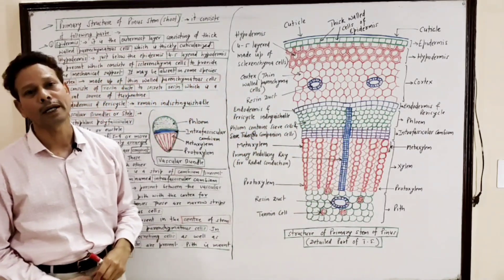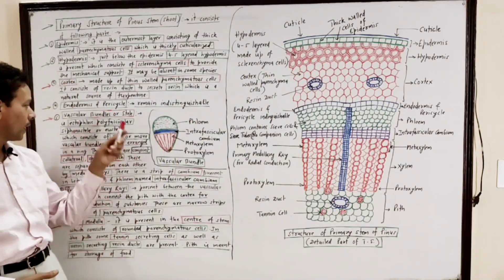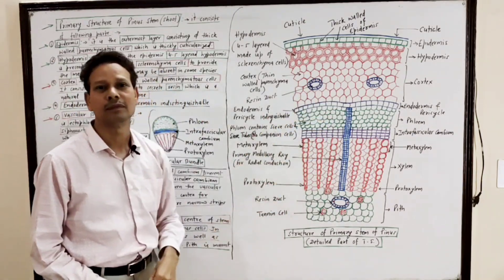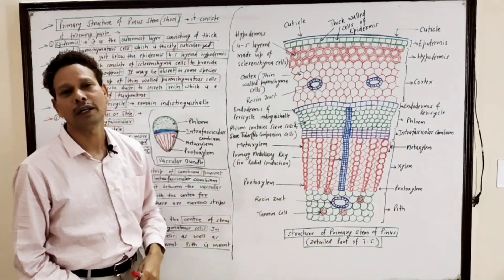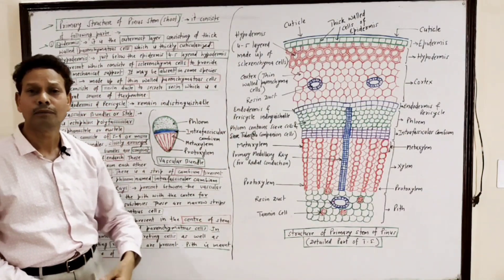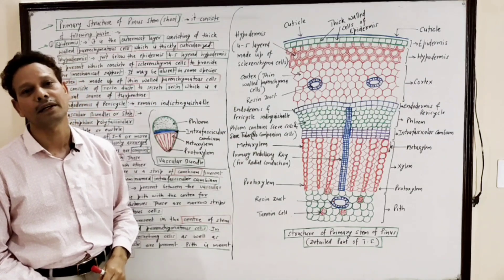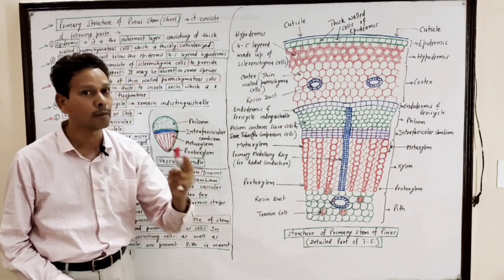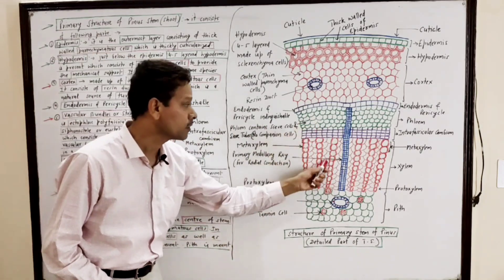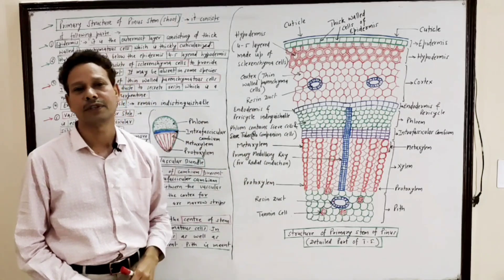Vascular bundles — very important. Vascular bundles, or stele, in the case of Pinus stem, the vascular bundle is ectophloic. Ectophloic means the phloem faces outwardly — it faces towards the cortex. It is polyvascular, meaning several vascular bundles are present, generally 5 to 9 or more. These vascular bundles are compactly arranged in a ring.